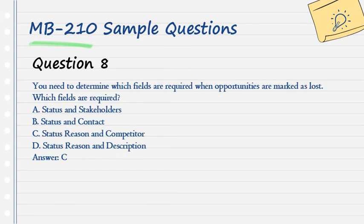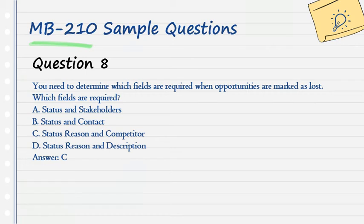Question 8. You need to determine which fields are required when opportunities are marked as lost. Which fields are required? A. Status and stakeholders. B. Status and contact. C. Status reason and competitor. D. Status reason and description. Answer: C.